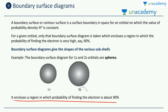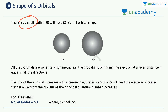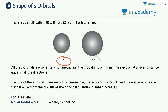The first shape we'll study is the most simple — the s orbitals. S is the name of the subshell with azimuthal quantum number L equal to 0. The number of orbitals within this subshell is 2L plus 1, which equals 1. So there is only one shape, which is a sphere. For 1s you have a small sphere, for 2s a bigger sphere, for 3s an even bigger sphere, and so on.